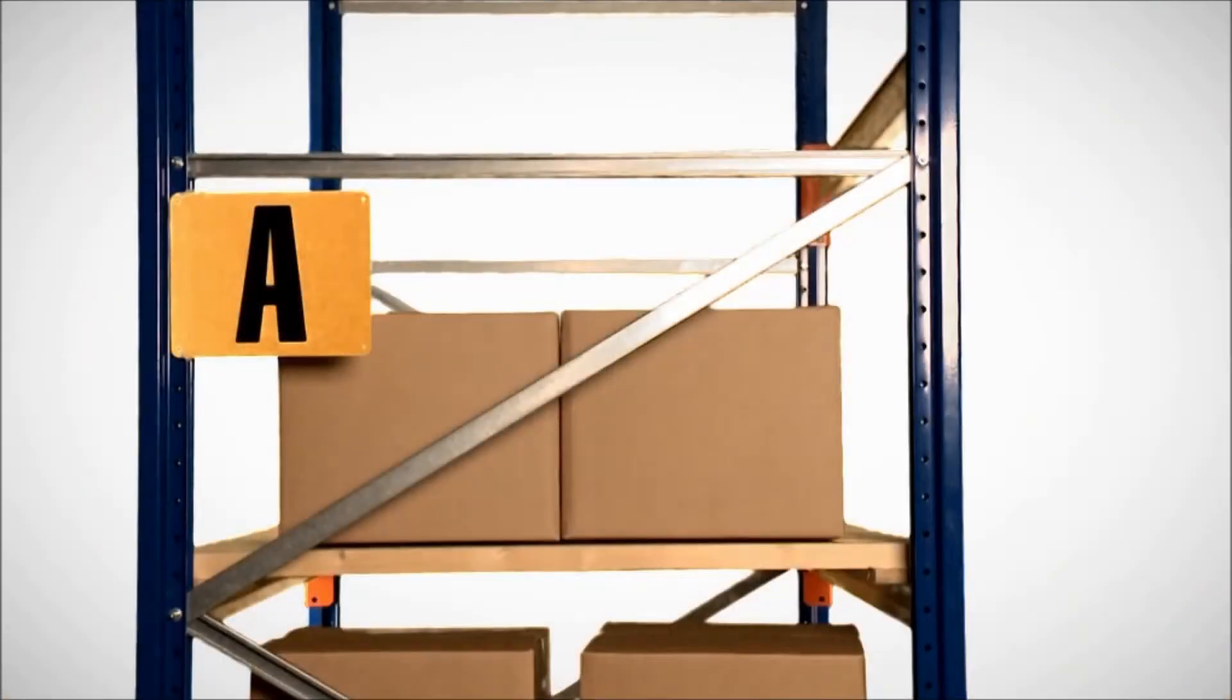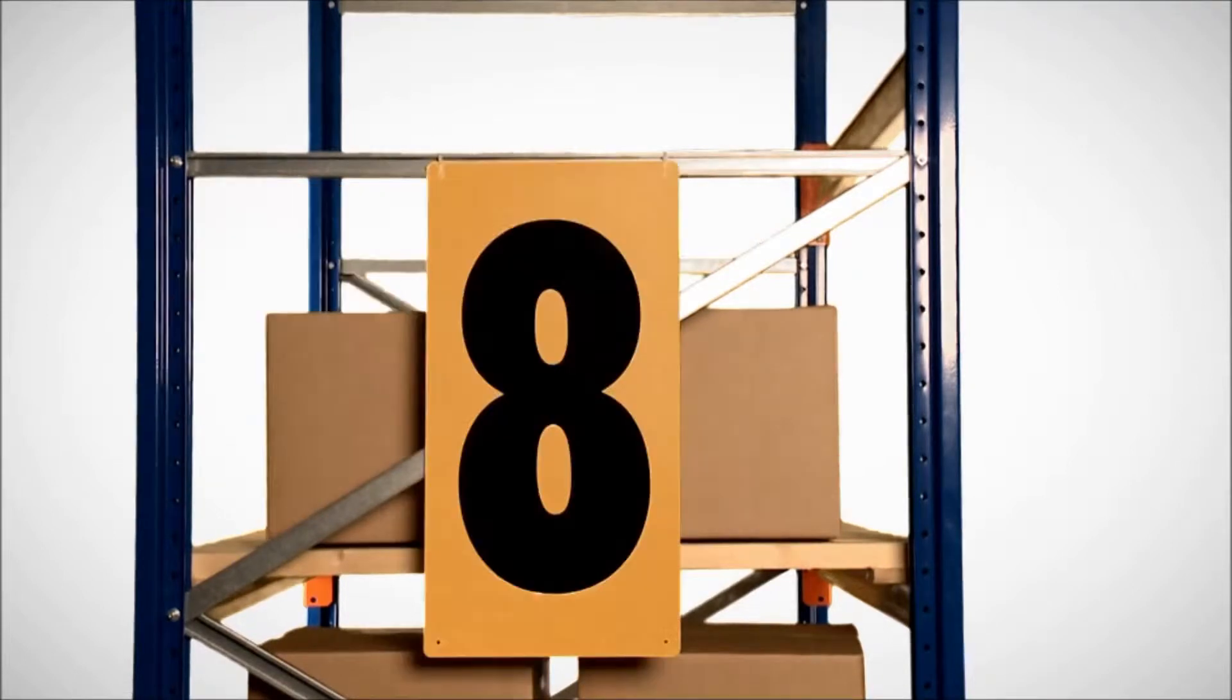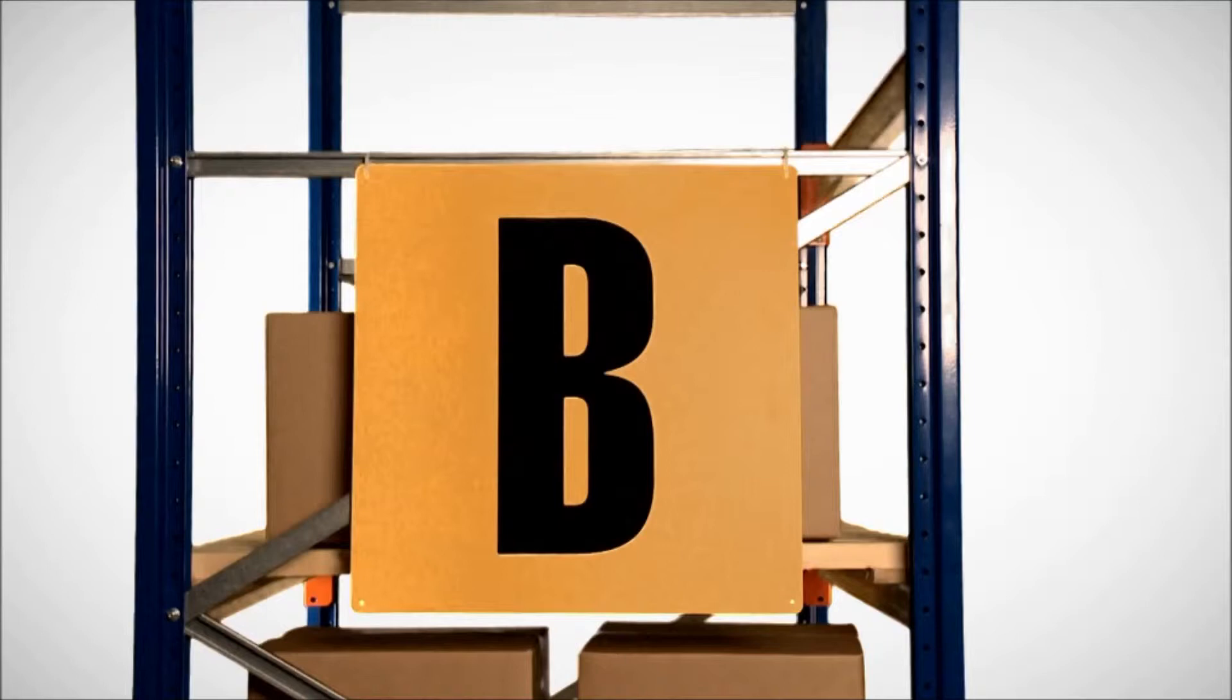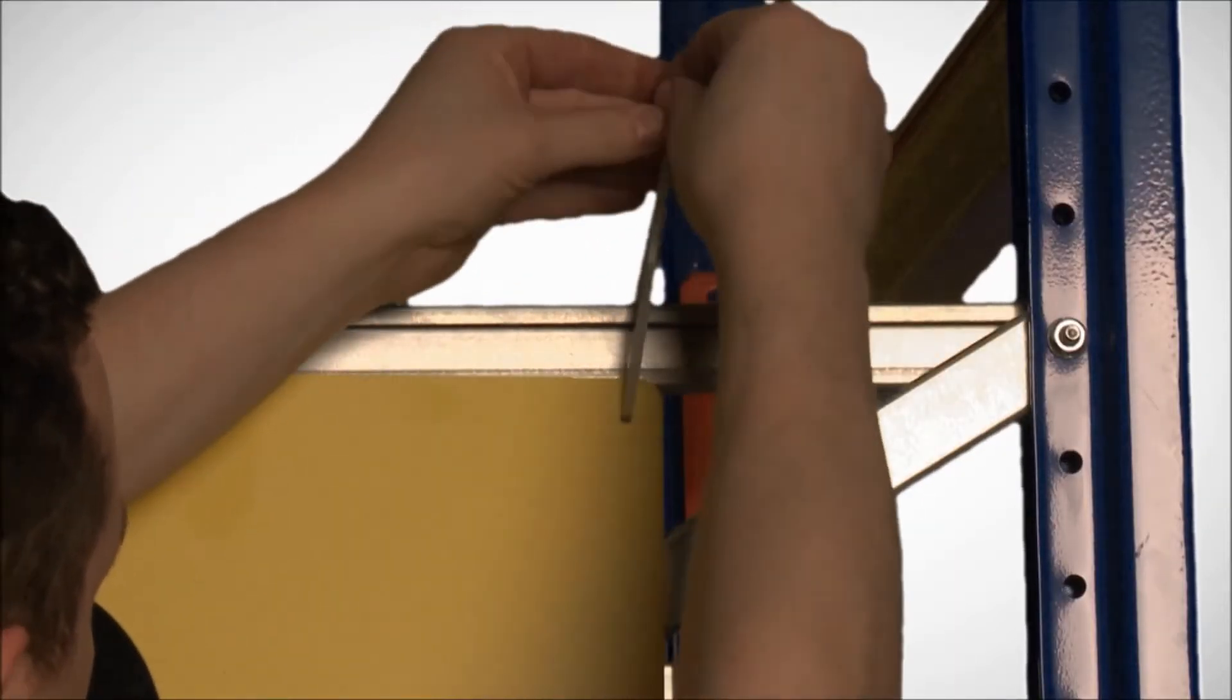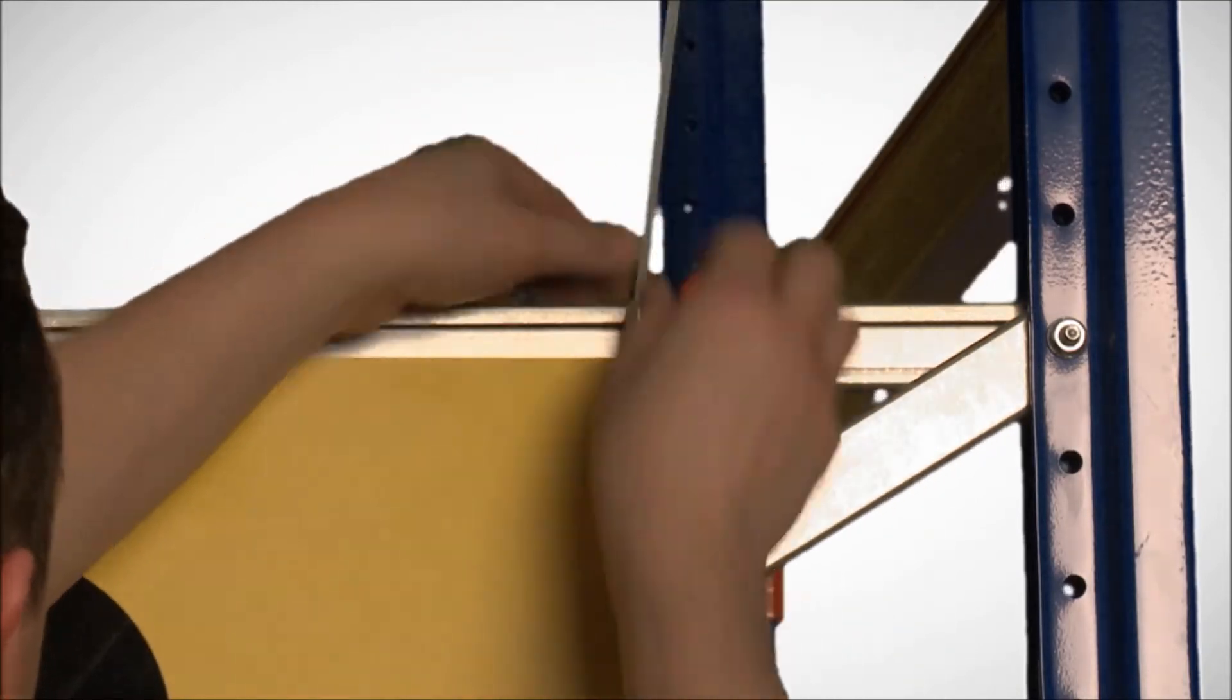To identify individual aisles we supply flat end of aisle signs in varying sizes from a small 95 by 160 mm up to a large 600 mm square. Each is supplied with radius pre-drilled corners for secure fixing with plastic cable ties.